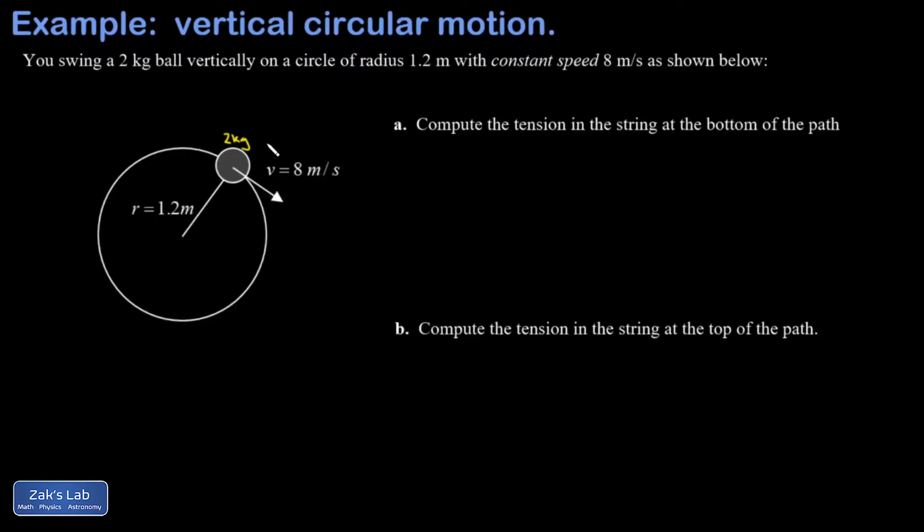We've got a ball swinging around in a vertical circle with a constant speed of eight meters per second. Now that would be very hard to actually do in real life because as the ball gets lower it should go faster because of conservation of energy, but let's just take the premise as it is. It's moving eight meters per second through the entire vertical circle, has a mass of two kilograms.